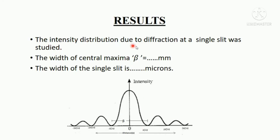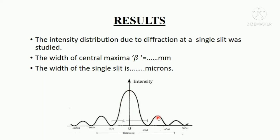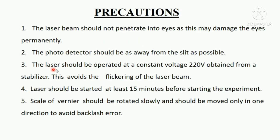Here are the results. The intensity distribution due to diffraction at a single slit shows central maxima followed by secondary maximas on either side. The width of the central maxima is maximum compared to the other maximas and the intensity is also higher.